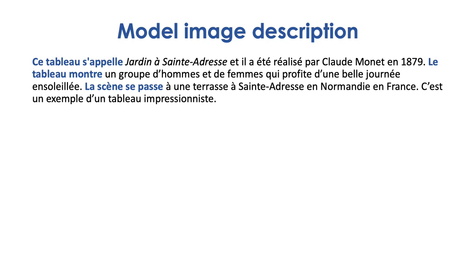And in English: This painting is called Jardin à Saint-Adresse, and it was created by Claude Monet in 1879. The painting shows a group of men and women who are making the most of a beautiful sunny day. The scene takes place on a terrace at Saint-Adresse in Normandy, France. It's an example of an Impressionist painting. Now we're going to move to step 2 — a detailed physical description of the image.